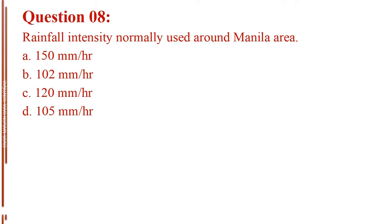Question number 8. Rainfall intensity normally used around Manila area. Letter A, 150 mm per hour. Letter B, 102 mm per hour. Letter C, 120 mm per hour. Letter D, 105 mm per hour.